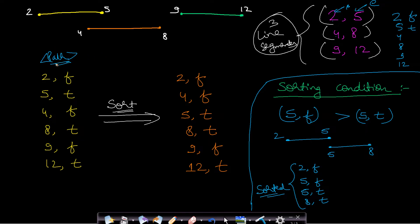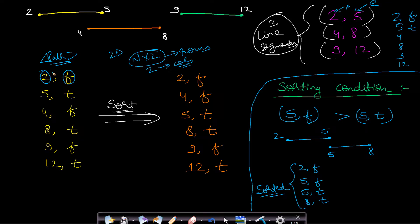In C++ STL you can use a pair, or use a 2D array with rows equal to the number of line segments times two, and two columns. The first column stores the coordinate value and the second column stores whether it is a starting or ending point. So 2,F means coordinate 2 is a starting point; 5,T means coordinate 5 is an ending point. We write all points this way: 2F, 5T for the first line; 4F, 8T for the second; and so on.